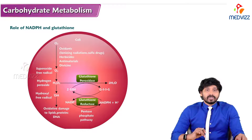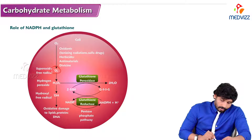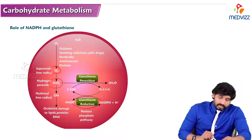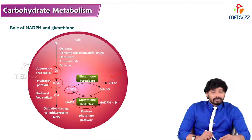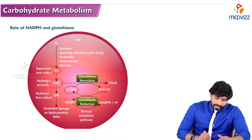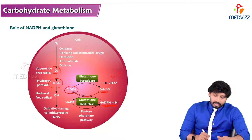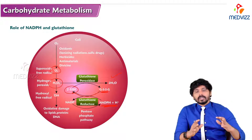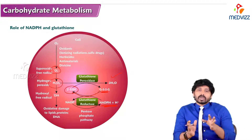Regarding the role of NADPH and glutathione: oxygen forms superoxide radicals and hydrogen peroxide. Glutathione peroxidase converts hydrogen peroxide into water by donating its hydrogens, becoming oxidized in the process. This oxidized glutathione is then regenerated back to reduced glutathione by the enzyme glutathione reductase, which uses NADPH. The source of NADPH for regenerating glutathione is the pentose phosphate pathway. This is the symbiotic way in which glutathione and NADPH work together in RBC.